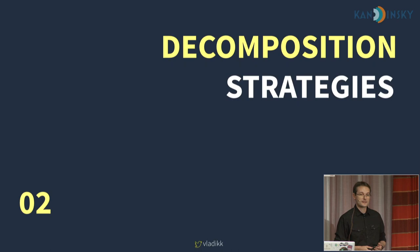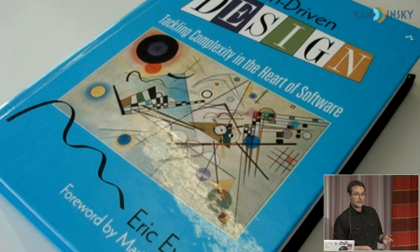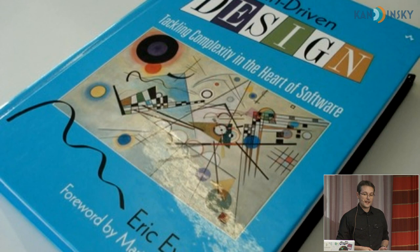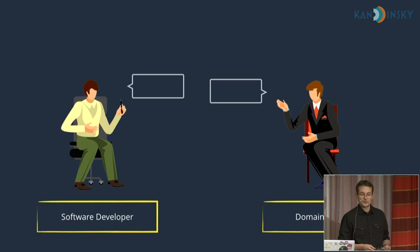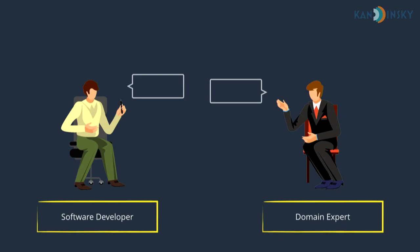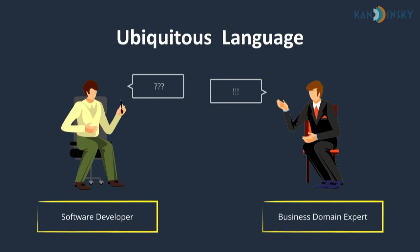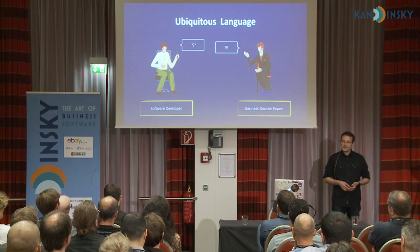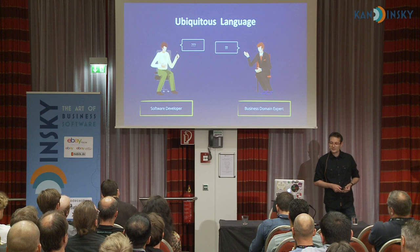The first decomposition strategy is bounded contexts. Ubiquitous language is the cornerstone practice of domain-driven design. To build worthy models, we have to understand the domain experts' way of thinking and speak their own language. However, domain experts are humans, and some of them may have different mental models for the same business concepts, while others might use the same terms to describe completely different concepts.